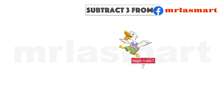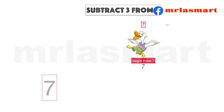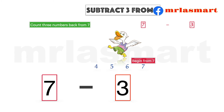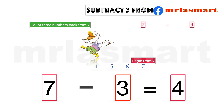Subtract 3 from 7. Begin from 7. Count 3 numbers back from 7: 6, 5, 4. 7 minus 3 equals 4.